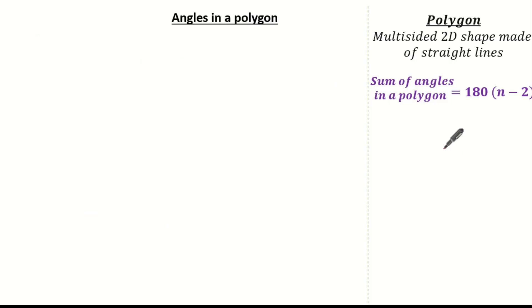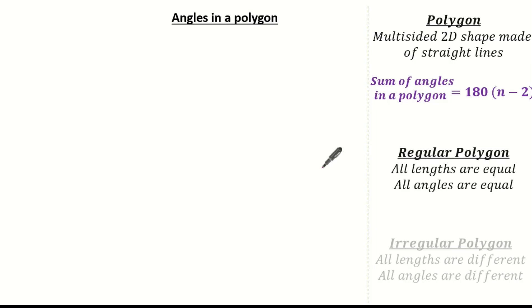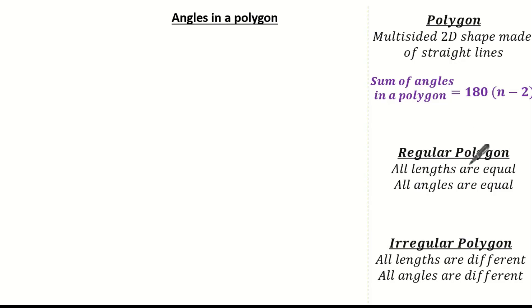Now we know the sum of angles in any polygon, let's have a look at some key words: regular and irregular. A regular polygon is where all the lengths are equal and all the angles are equal. An irregular polygon is where all the lengths are different and all the angles are different.